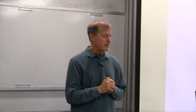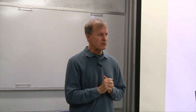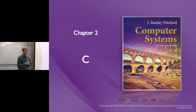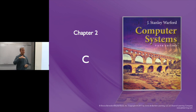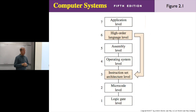Chapter 2 is a review of the C programming language. Many of you have programmed in C++ but not C — C is just a subset of C++. We're at level HOL6, higher order language 6. Figure 2.1 shows what happens when you compile a program: the compiler translates your C program at level 6 down to ISA level 3 — machine language, binary.